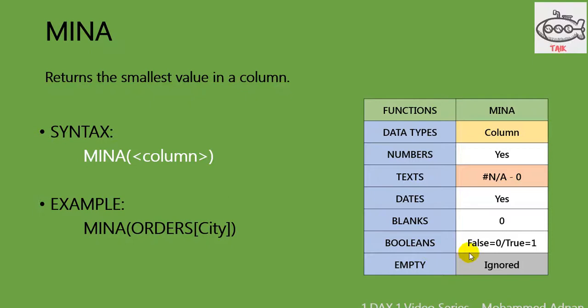For boolean: for false, it will return zero; for true, it will return one. Empty rows are not counted here — they will be ignored by default.